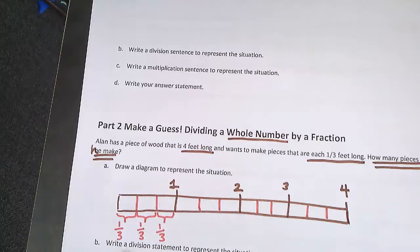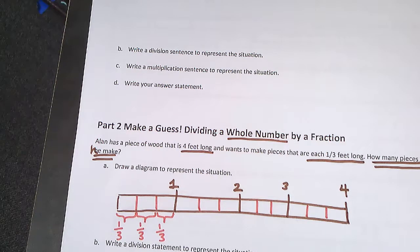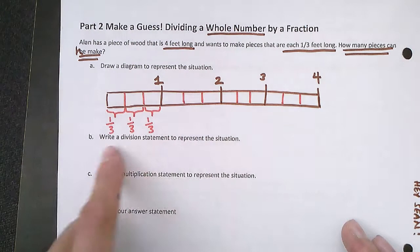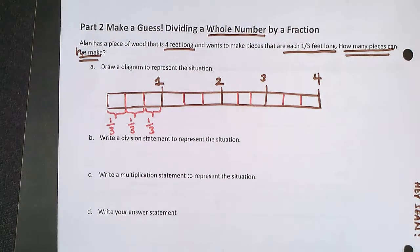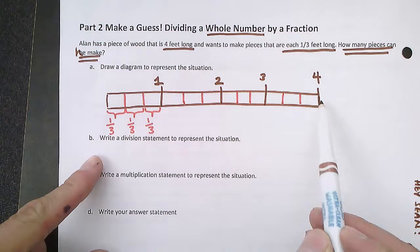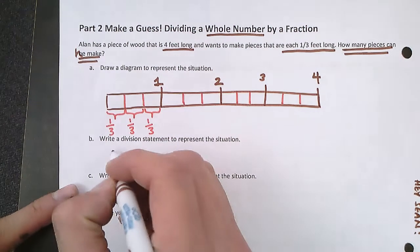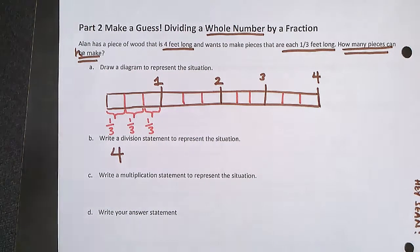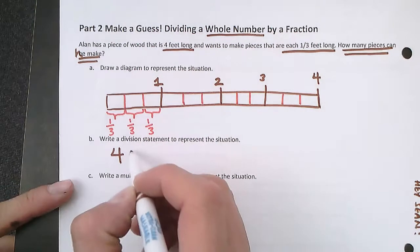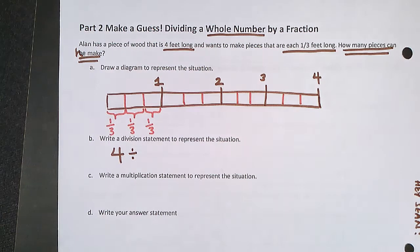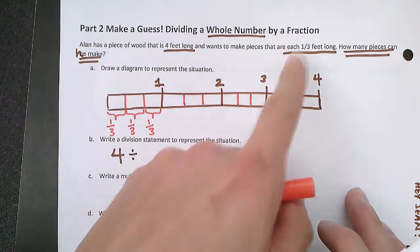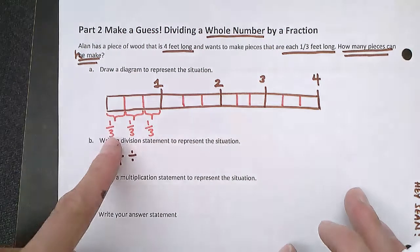The next part says to write a division statement to represent the situation. Whenever you write a division statement, you think: how much did I start with? I can check my diagram — altogether I had 4 feet. I divided it into sections that were each one-third of a foot.